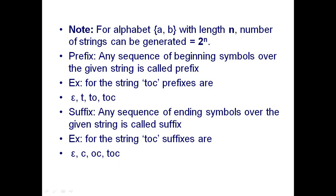In prefixes you have to take all the beginning symbols for any given string. So total four are possible: epsilon, T, TO, and TOC. Suffixes are the totally opposite — any sequence of ending symbols over the given string is called a suffix. In prefixes we start from the beginning, but in suffixes we start from the ending.